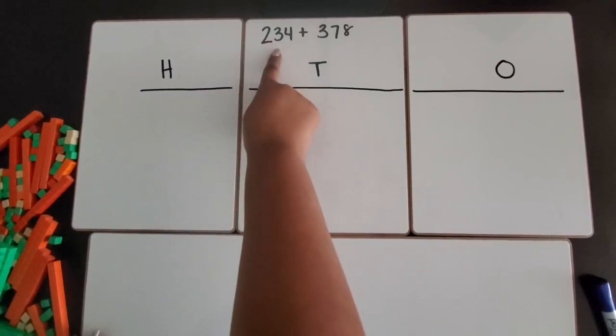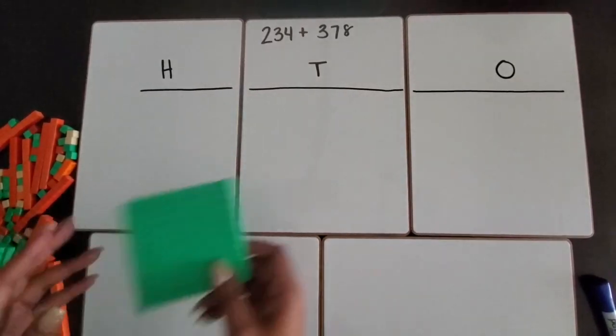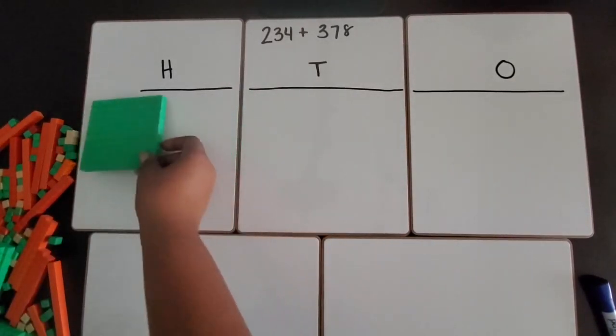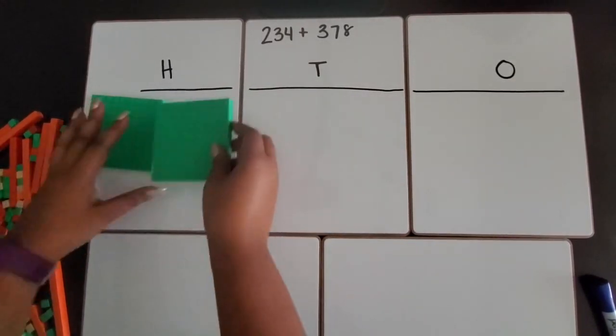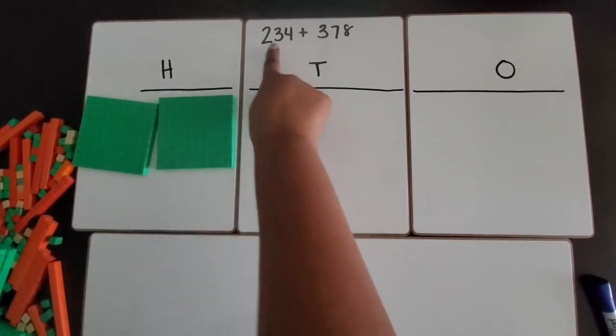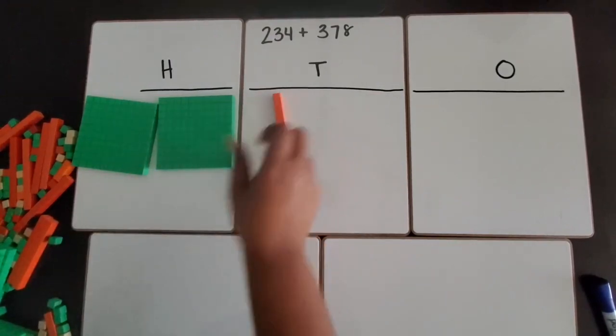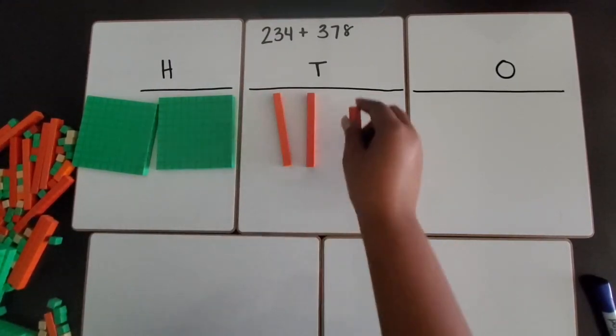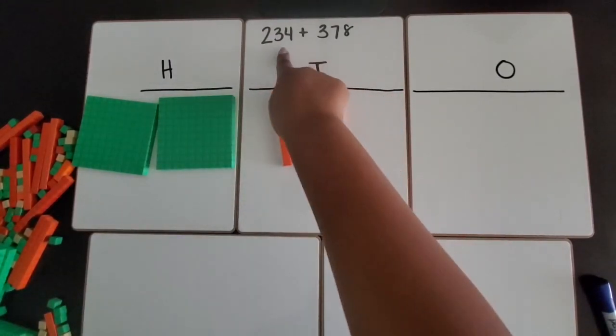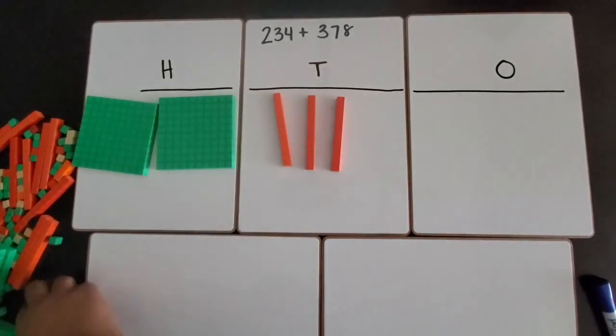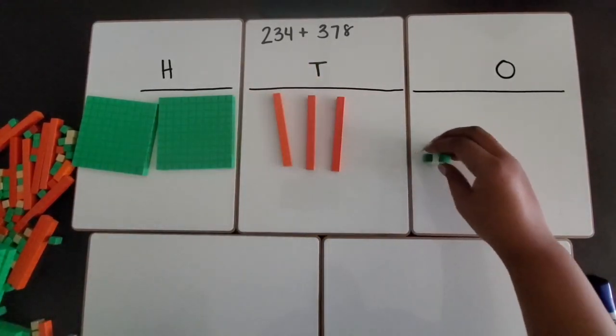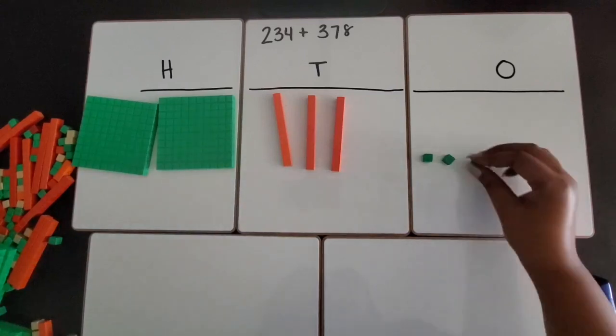The first number we are going to build is 234. 234 has two hundreds, so we are going to use these hundred flats to represent the hundreds. 234 has three tens, so I am going to use three ten rods. And 234 has four ones, so we are going to show four ones.